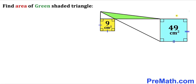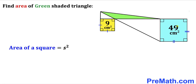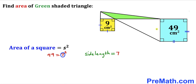Let's focus on this blue square whose area has been given to us as 49. Recalling the area of a square formula: area equals s squared, where s represents the side length. In our case the area is 49, which can be written as 7 squared. So the side length of this blue square is 7 — that means all four sides are 7.